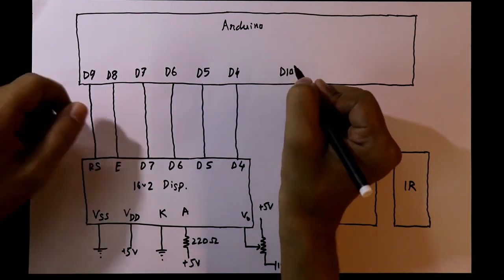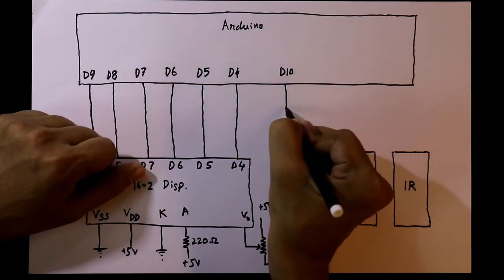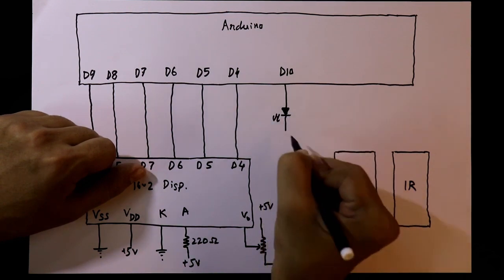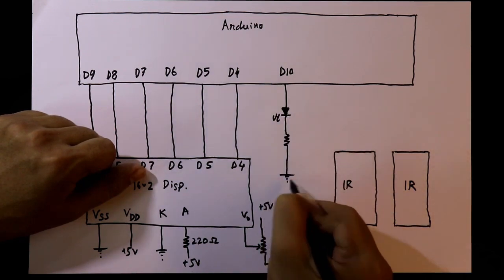Now we need one LED. It will be connected to D10 of Arduino. The value is 220 ohms.